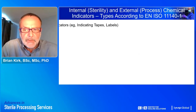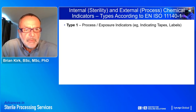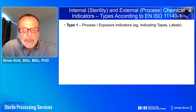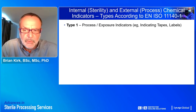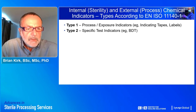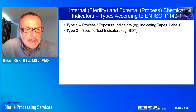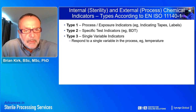Looking at chemical indicators: ISO 11140 Part 1 specifies six categories. Type 1 are process indicators for use on the outside of packs to indicate a pack has been processed. Type 2 are specific test indicators such as the Bowie-Dick test, used on a routine basis to check the sterilizer is working correctly. Type 3 are single variable indicators, which have been around for a long time but offer limited utility because, as their title states, they only monitor one of the process variables.